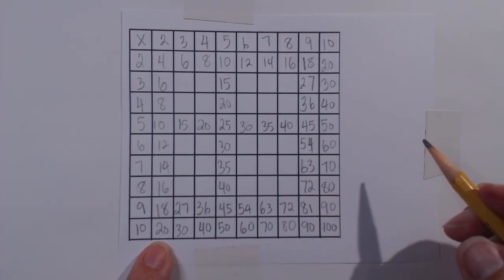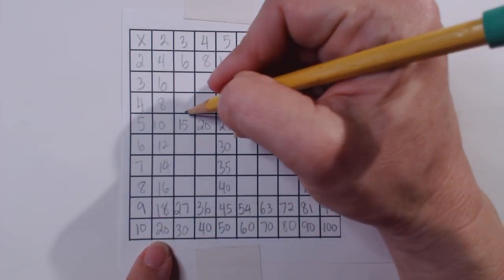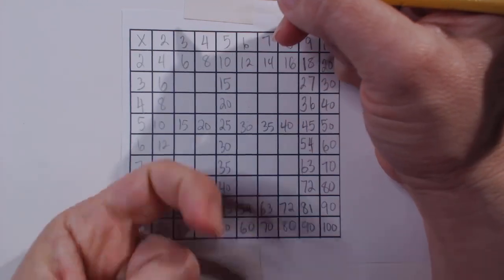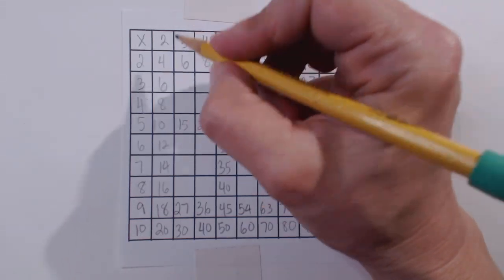So we have our skip counted, easier ones, our nines trick. Now we can start filling in the threes, fours, sixes, sevens, and eights. If at this point students still need to add on and add on and add on to each of these, certainly allow them to do that.